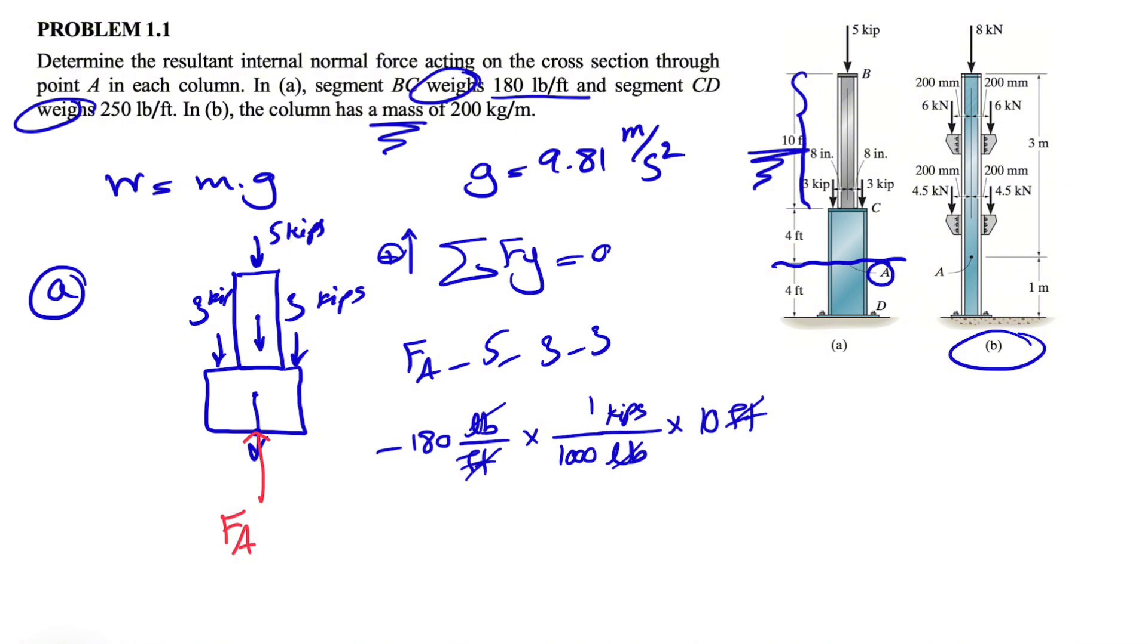That's for member BC. We also have half of member CD. So we know that one is 250 pounds per foot, times kips over pound to get rid of the pound unit, and the distance that we have is four feet.